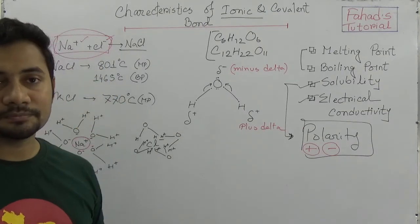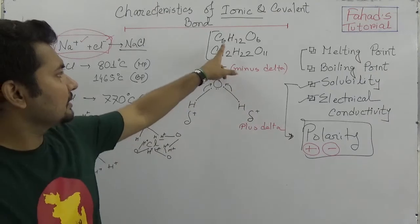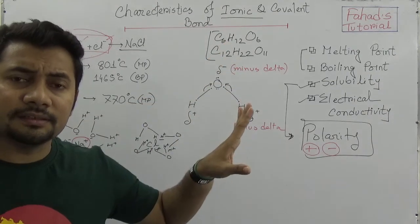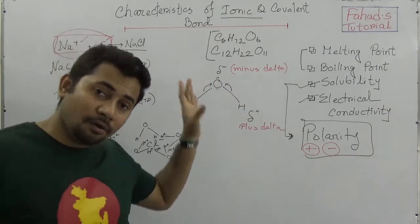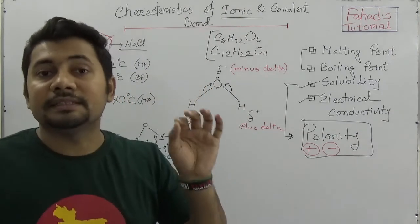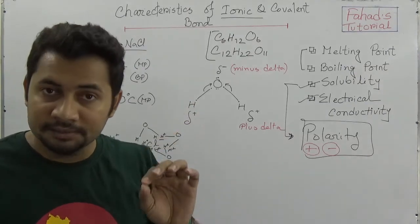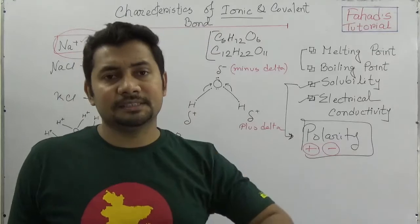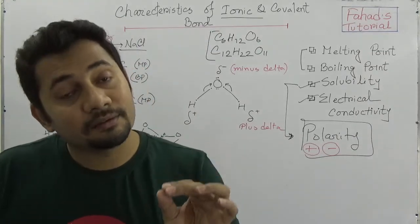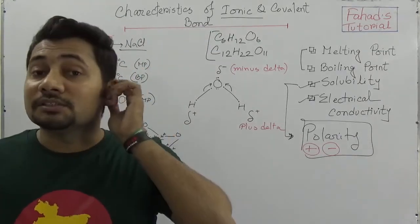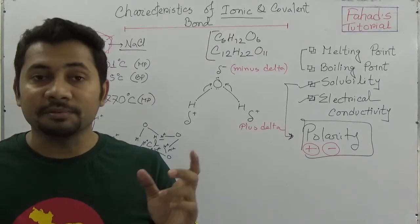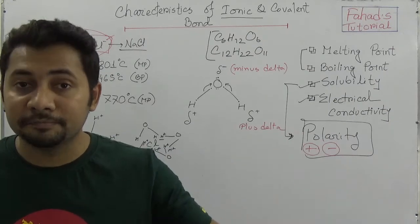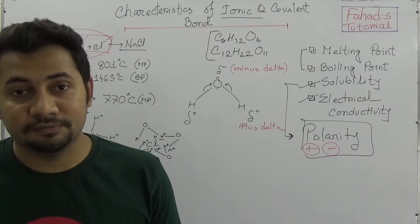So, without some exceptions like glucose and sugar — which are covalent compounds but also dissolve in water — all ionic compounds dissolve in water, and most covalent compounds are not soluble in water, because covalent compounds don't create the polarity needed for dissolving.